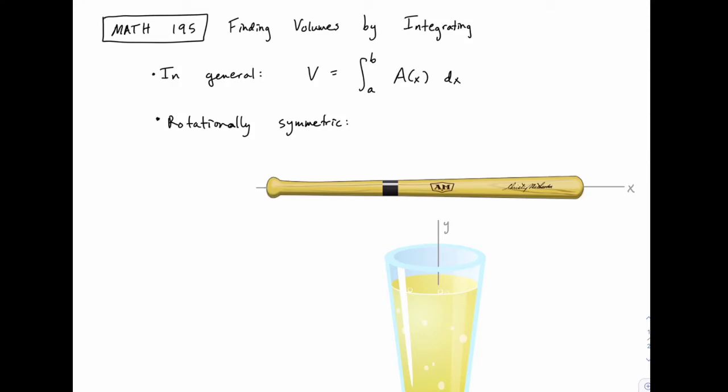We've already seen a few examples of how to find the volume of an object by integrating. In general, if you can divide an object into thin slices, and each thin slice has a cross-sectional area that you can find, we can find the volume by integrating that area function from one end of the object to the other. That's what we have in this general formula: volume is the integral of the area function.